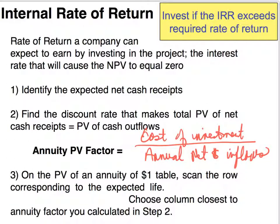Once we find this annuity present value factor, we're going to go into our time value of money tables and look for that factor on the present value of an annuity table, scan the row that corresponds to the expected life, and then choose the column that's closest to the annuity factor we calculated. We're going to see how that works with an example.